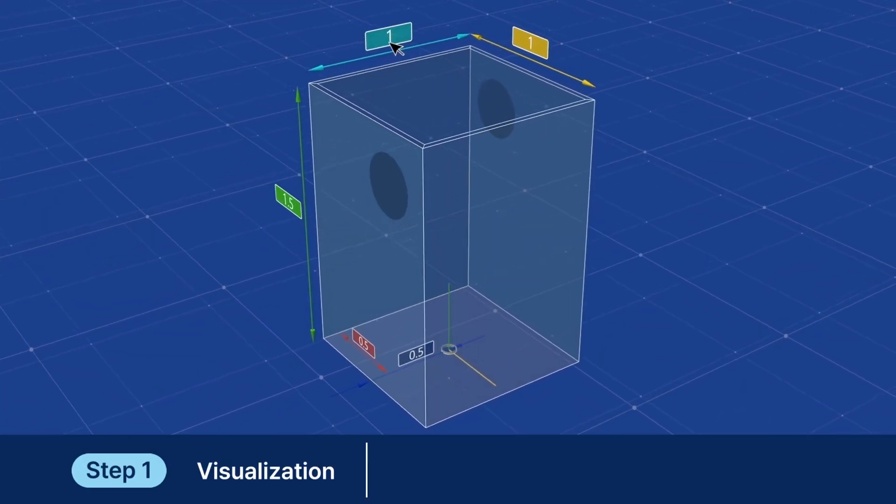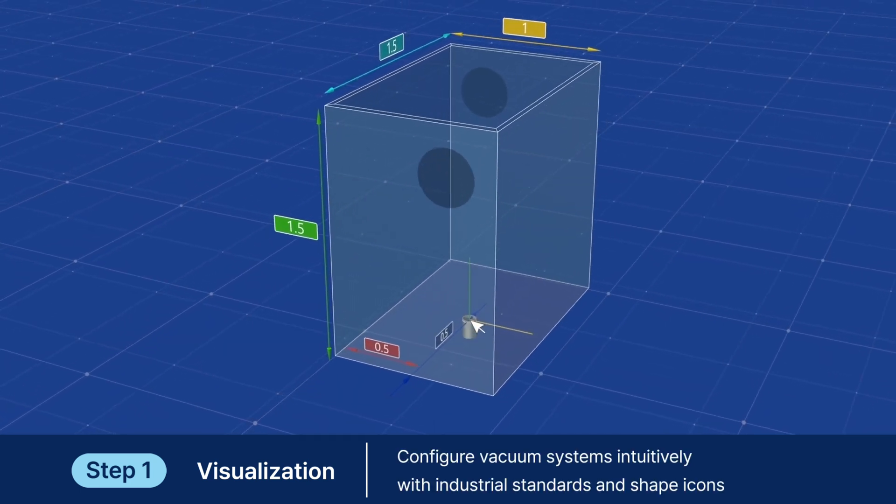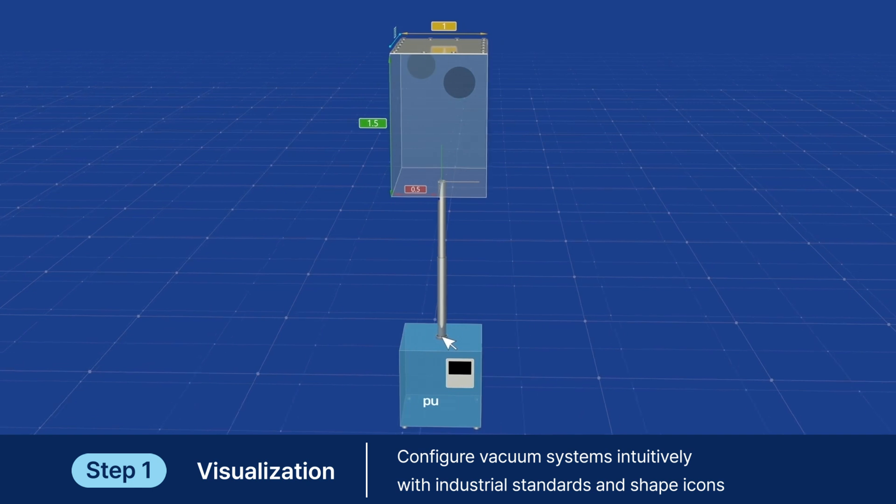First, input basic process conditions and configure the vacuum system in 3D on the web.